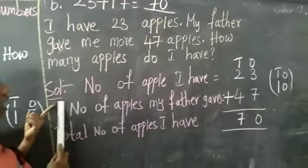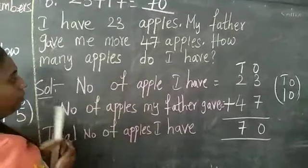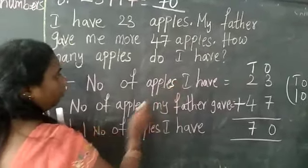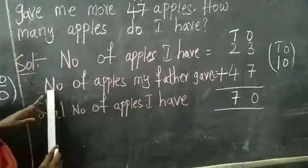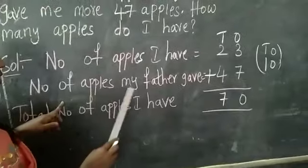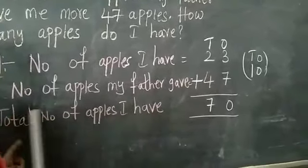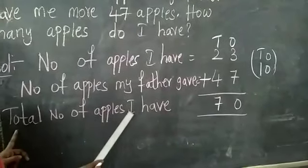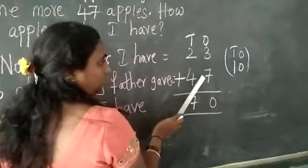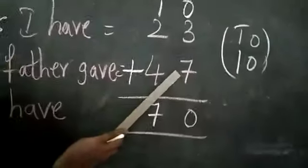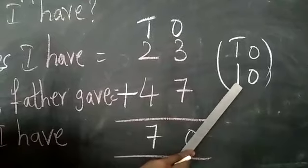Number of apples I have 23. Number of apples my father gave 47. So total number of apples I have how much children here? 3 plus 7. 3 plus 7 is 10. So we are writing here 10.